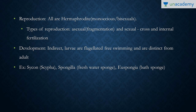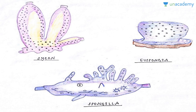Some important examples to remember from the NCERT, which are frequently asked in exams: Sycon, also known as Scypha; Spongilla, which is the freshwater sponge; and the common bathing sponge, Euspongia. Look at these pictures — direct picture-based questions are asked in exams. Sycon can be memorized by its three finger-like structures; Euspongia looks somewhat like a mushroom; and Spongilla at first glance looks like a fancy fish.